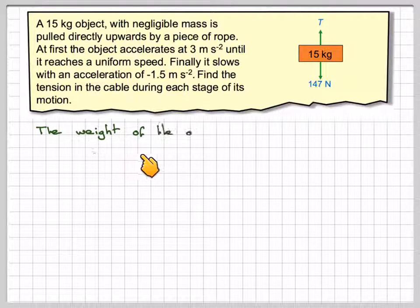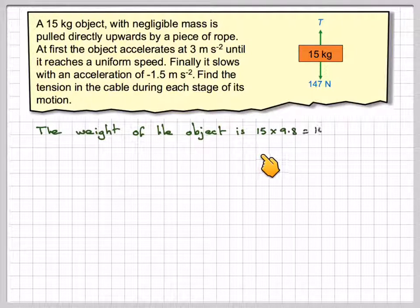The weight of the object is 15 times 9.8, which is 147 newtons. So 9.8 is the acceleration due to gravity.